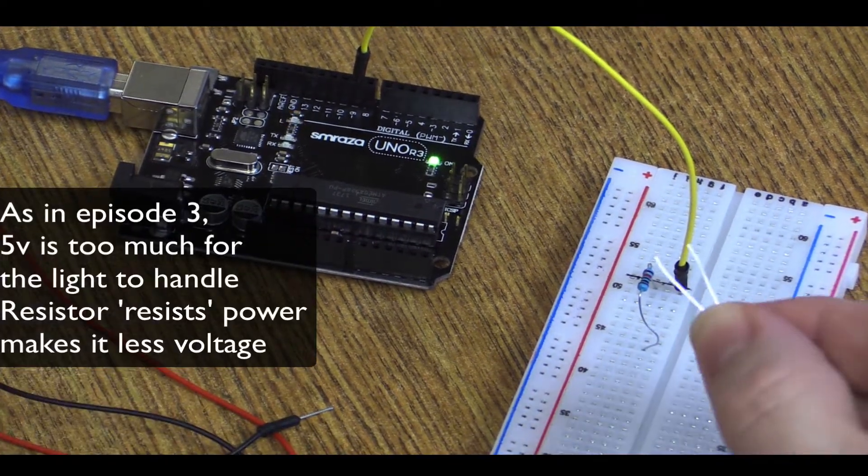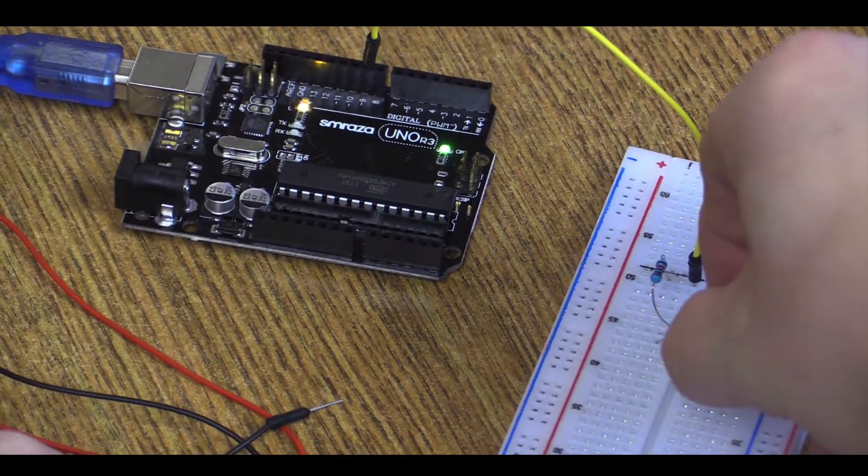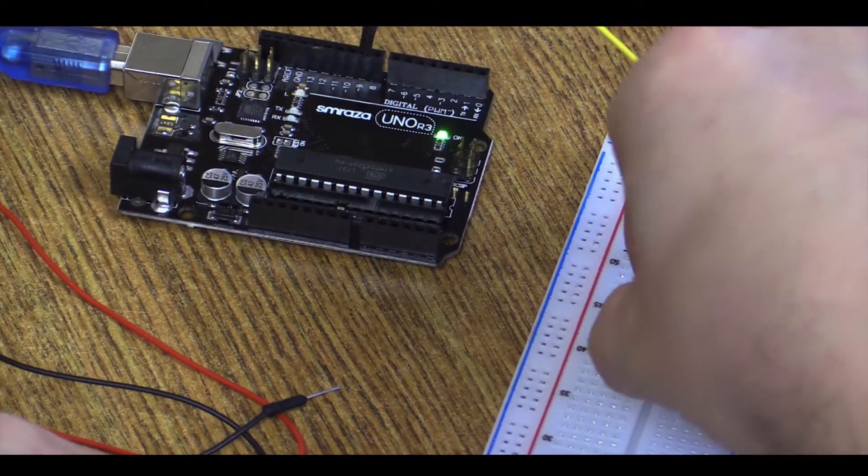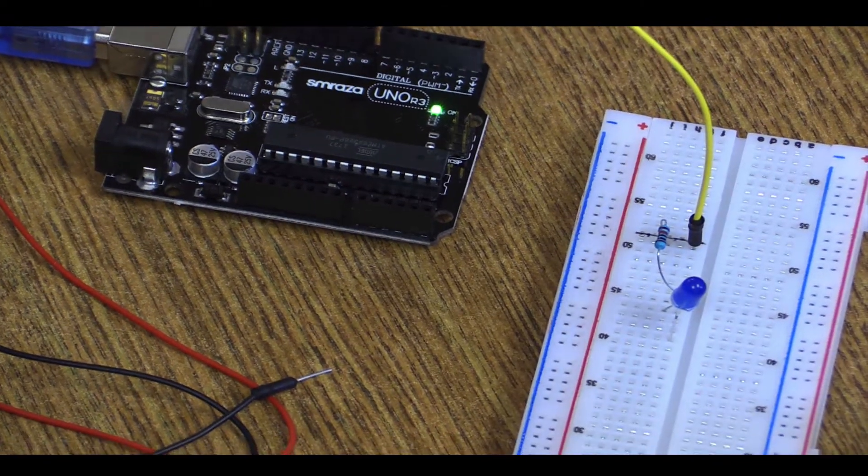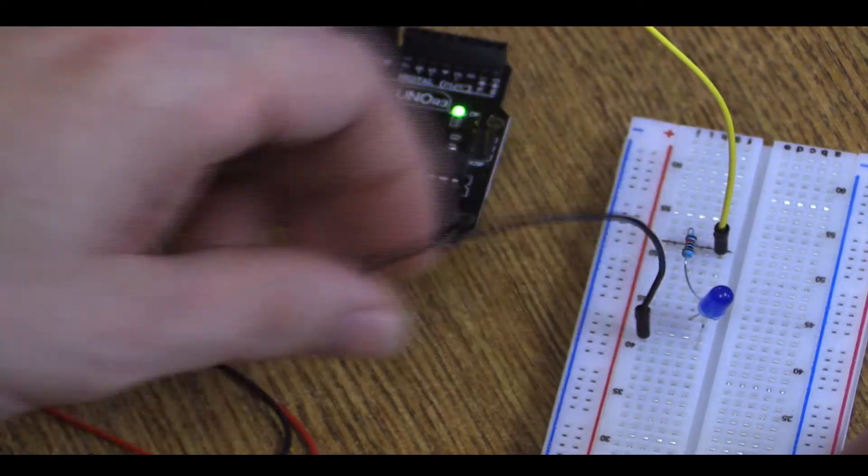We learned earlier that the long one is positive, and the short one is negative. We've got the positive there, and then we're going to take the negative side and bring it to the ground part of our board.